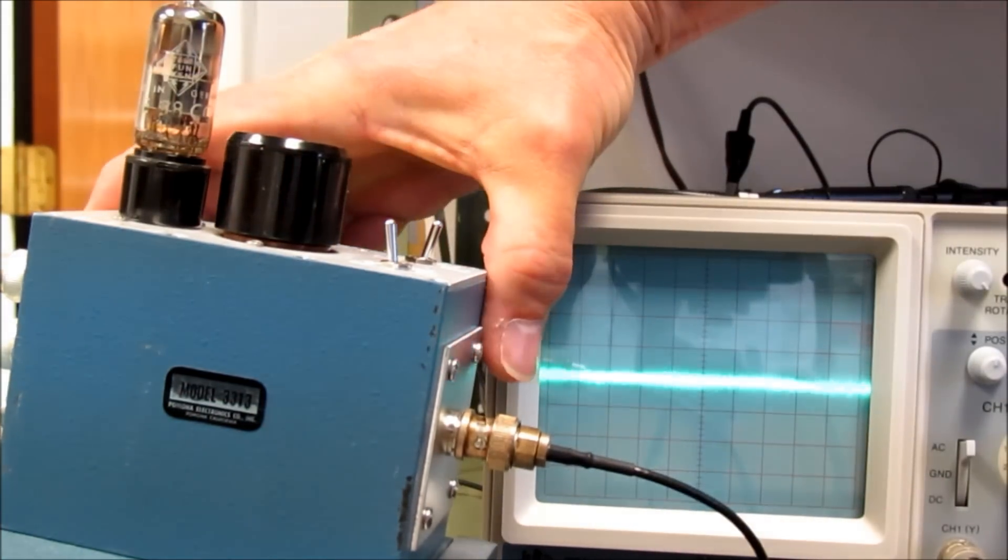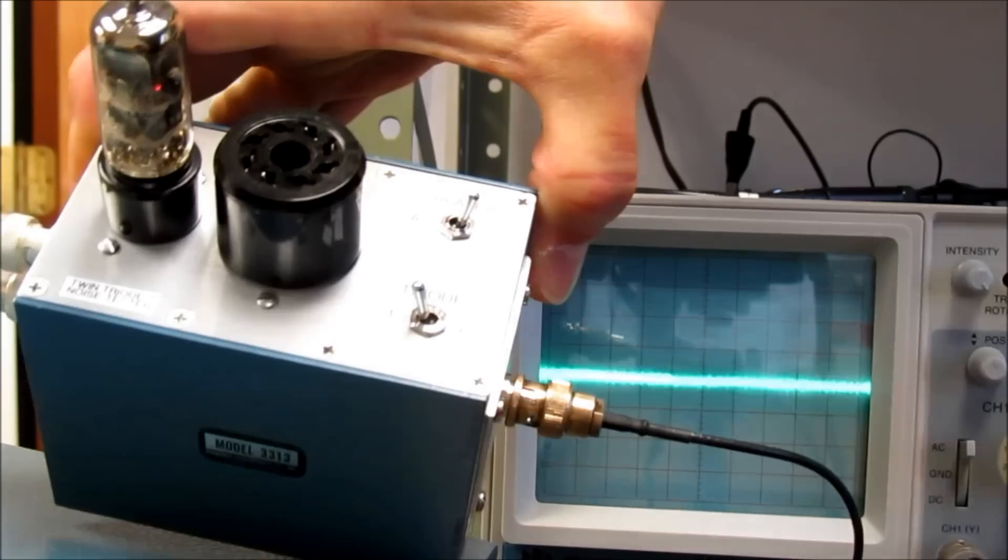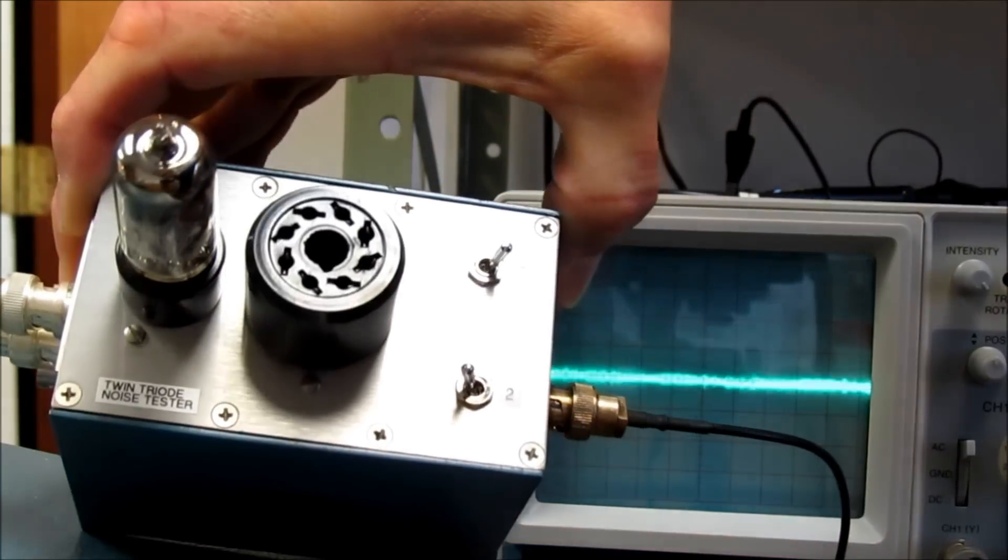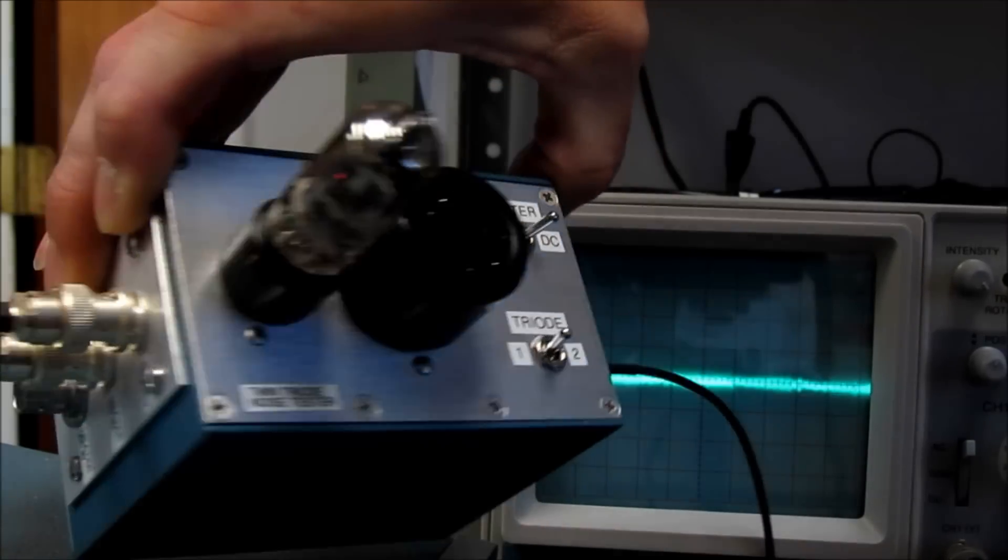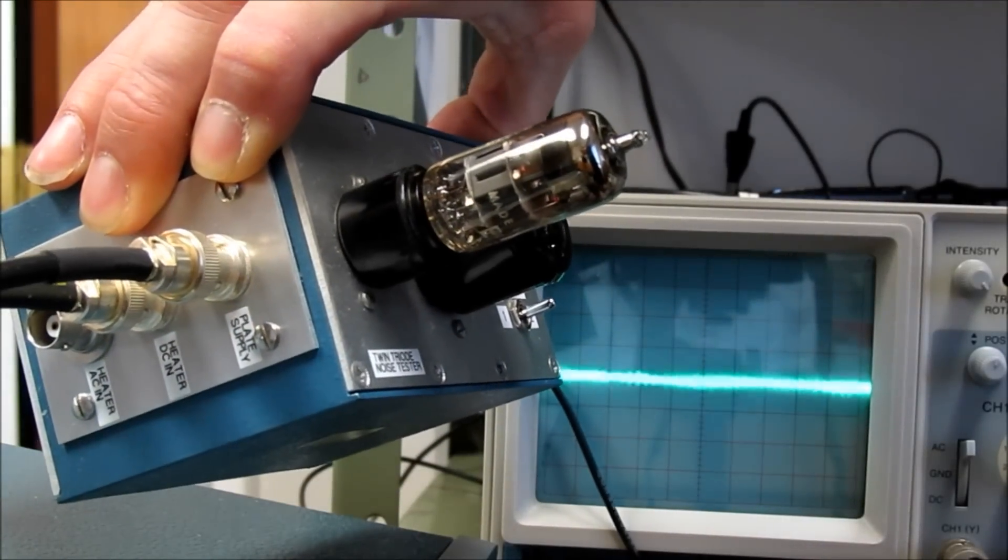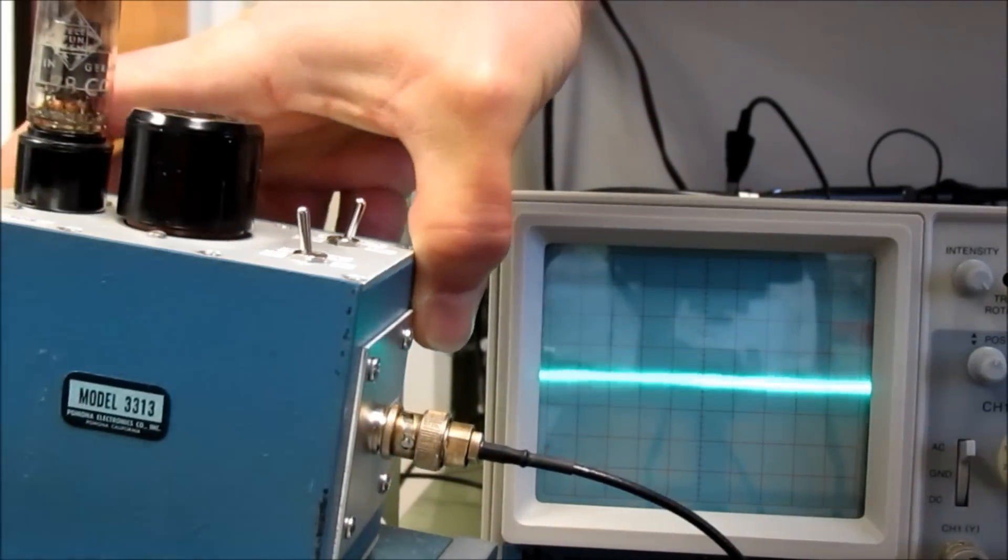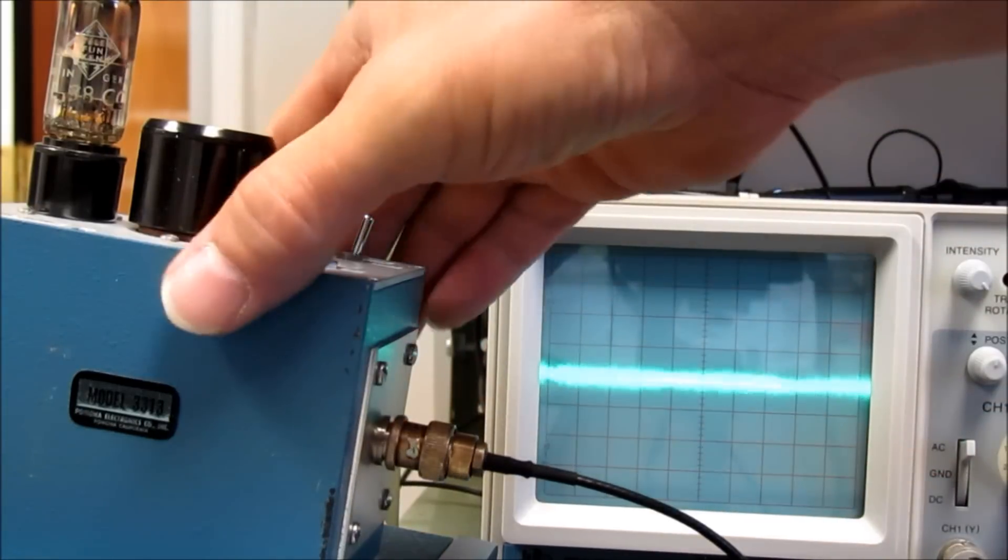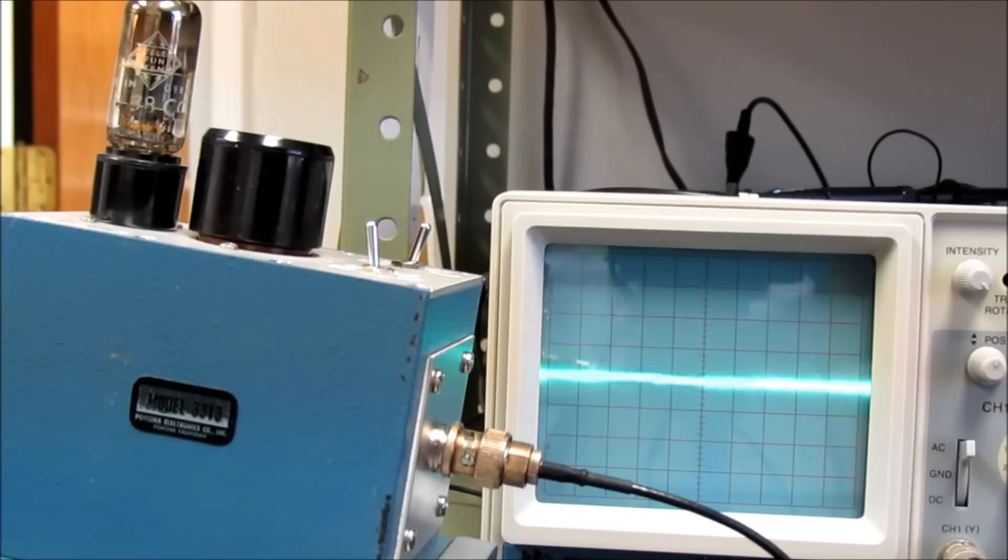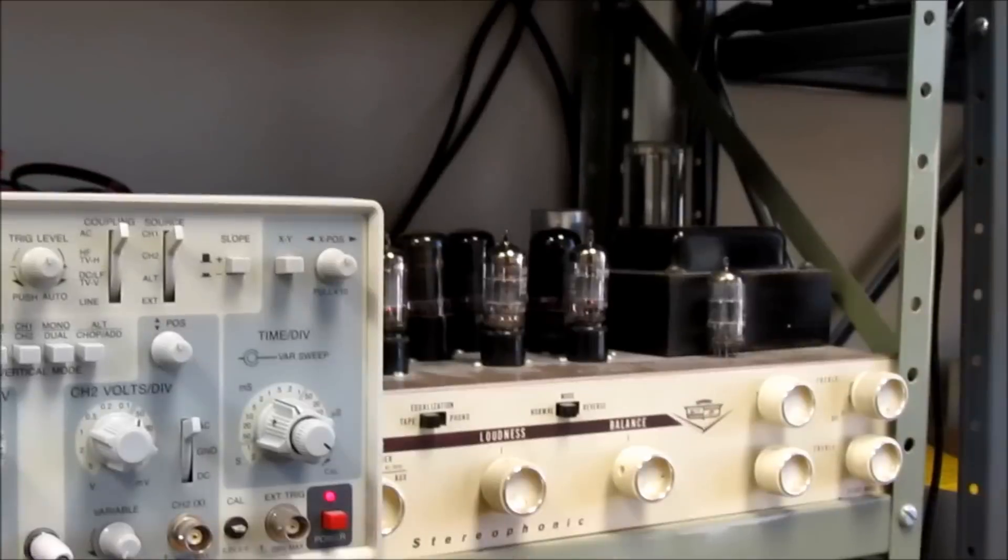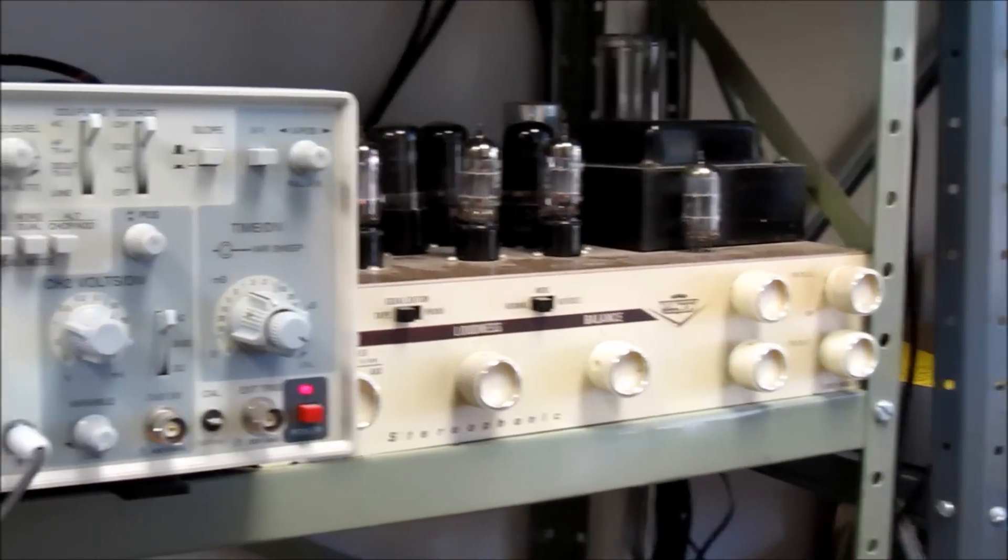We're using a noise test fixture that is specially designed for checking tubes with both octal and 9-pin sockets. It has external power supplies and external plate supplies, and it has an audio output which we are feeding not only to an amplifier—we have a vacuum tube amp that we're using for audio.